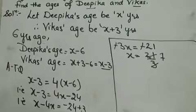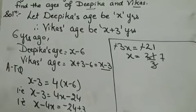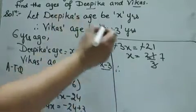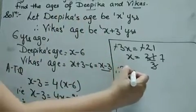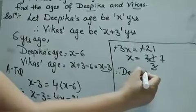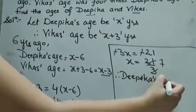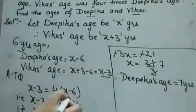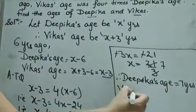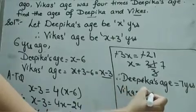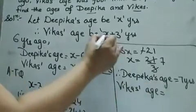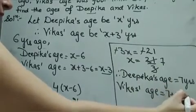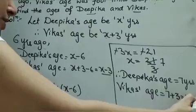X equals 7. X was supposed to be Deepika's age, so Deepika's age equals 7 years. And Vikaas's age is X plus 3, that is 7 plus 3, so Vikaas is 10 years old.